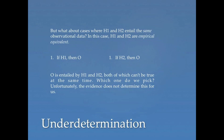But what about cases where H1 and H2 entail the same observational data? This is where the problem of underdetermination comes in. In this sort of case, H1 and H2 are empirically equivalent — meaning two incompatible hypotheses make the same observational predictions. So H1 predicts O, but so does H2; they both tell us we should find the world to be a certain way, yet both can't be true at the same time.